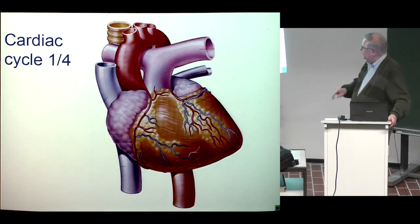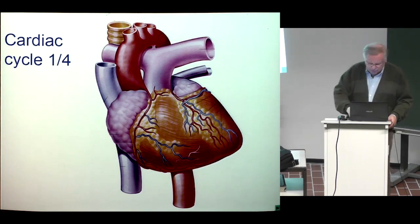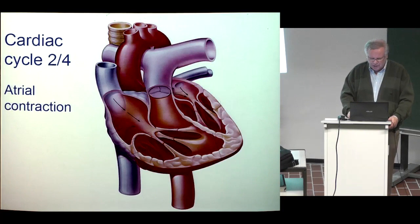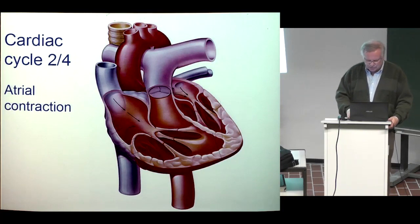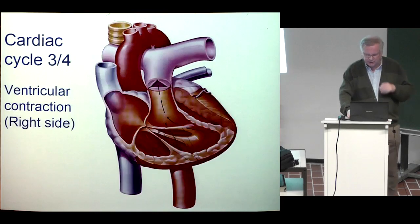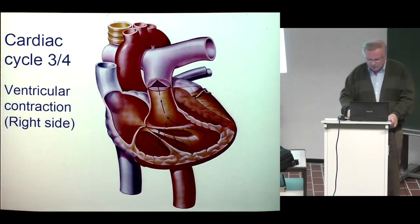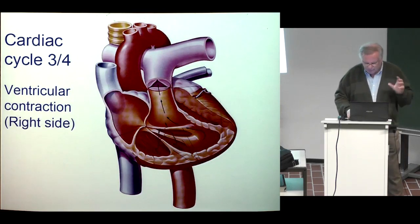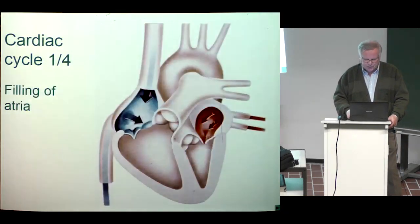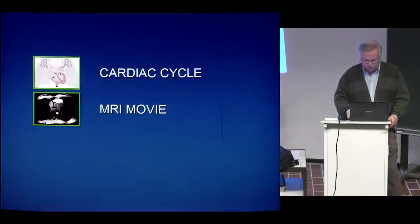The cardiac cycle — this is basic information which you know, but I still show the slides. Starting from atrial contraction: left and right atria serve as turbos filling the ventricles. Then the ventricles contract and feed the blood to the right side and to the left side.